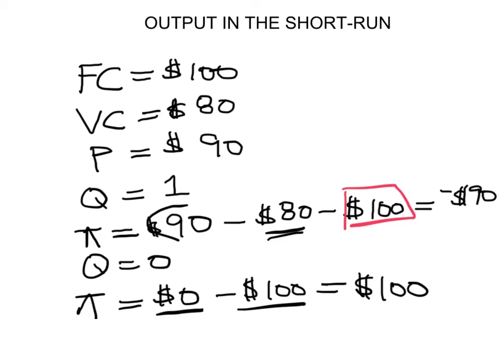So this shows you that in the short run, since you have to pay the $100 anyway, your decision on whether you want to operate or not should really be based on the variable costs. And as long as the revenue you make for selling your goods is higher than the money you spend on the variable costs, then you should operate.